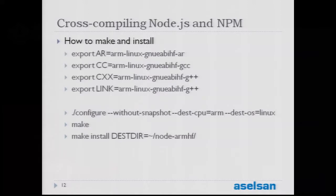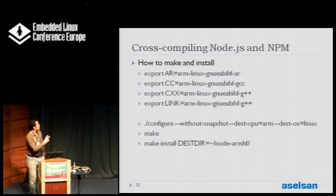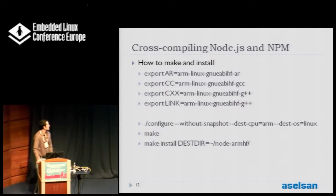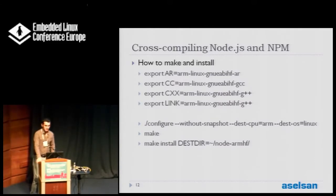After deciding our configuration options, we export our cross-compile binaries, then do configure with our options, and then make and make install. I personally extract them to a folder and copy them to my embedded device. After these steps, we are ready to execute Node on our target.